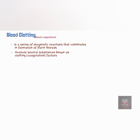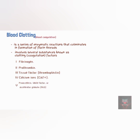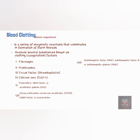These include: Factor I, also known as fibrinogen; Factor II, also known as prothrombin; Factor III, also known as tissue factor or thromboplastin; Factor IV, which is calcium ions; Factor V, also called proaccelerin, labile factor, or accelerator globulin (AcG); and Factor VII, also known as serum prothrombin conversion accelerator (SPCA), stable factor, or proconvertin.